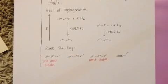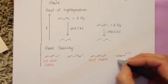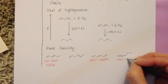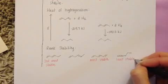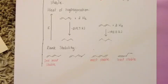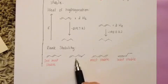We haven't talked about this, but cumulated double bonds are very unstable. So this molecule, or any molecule with cumulated double bonds is least stable. And this molecule with the isolated double bonds is next least stable.